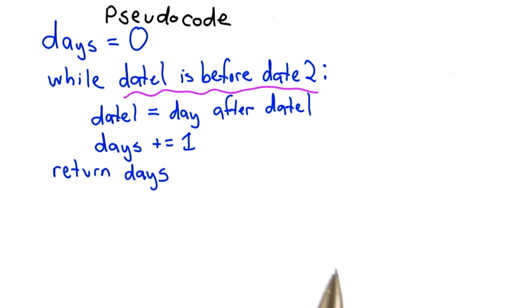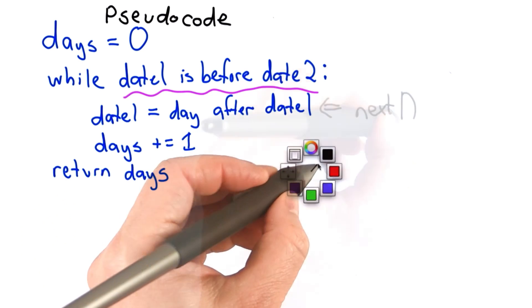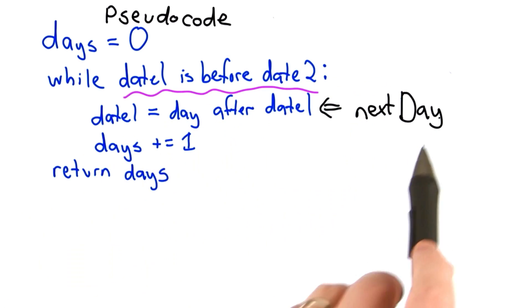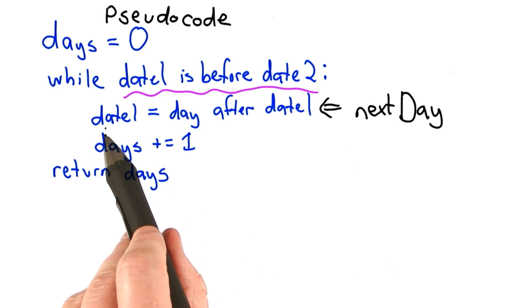And then we have the body that keeps incrementing the date. Well, we've got our procedure now to do this part. We implemented the next day that we're ready to turn into code.